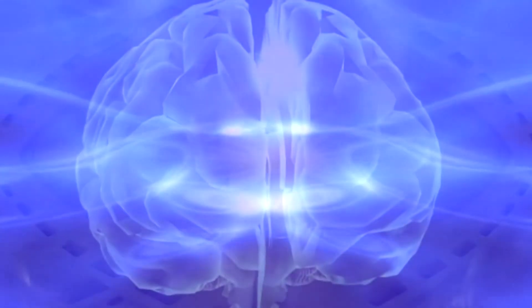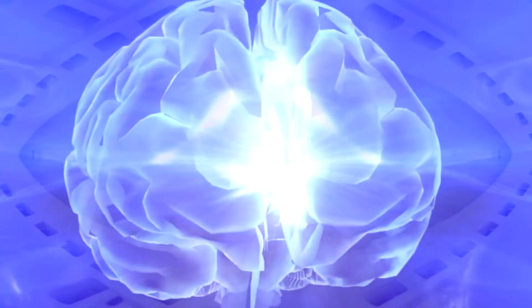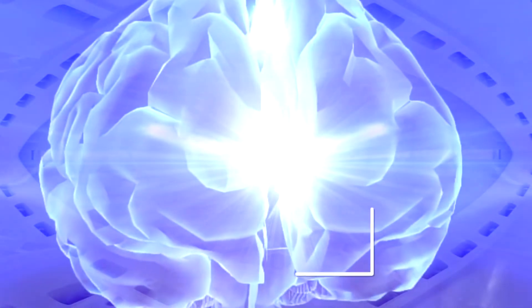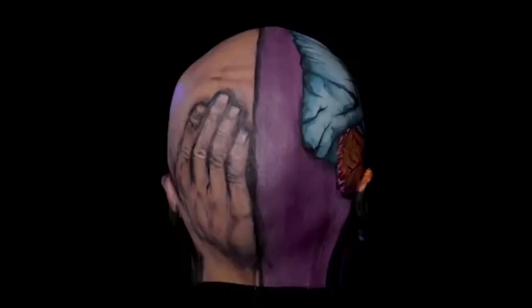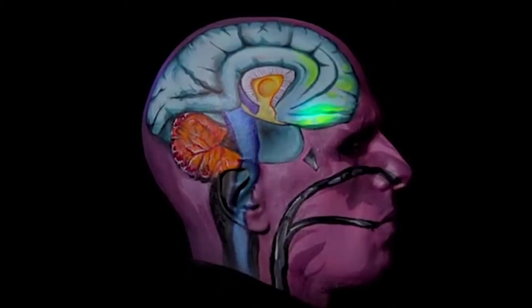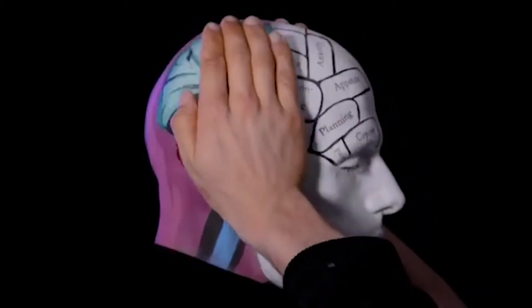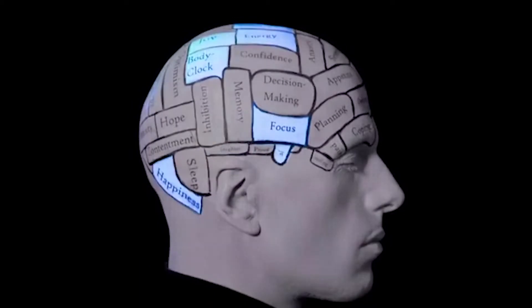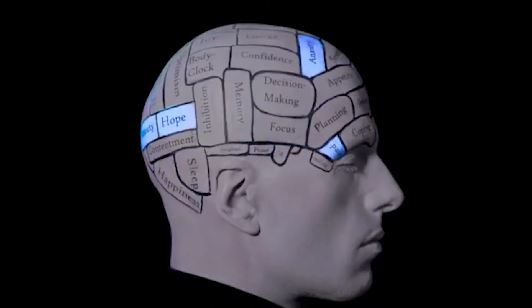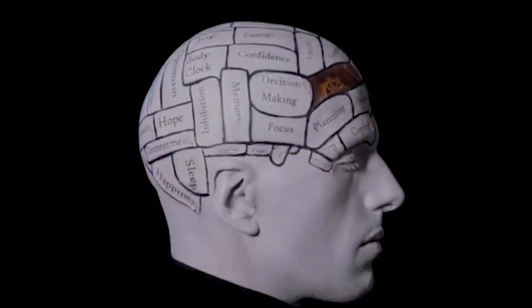Cognitive bias is a tendency by the human brain to perceive information through a filter of personal experience and preferences. It is a coping mechanism by the brain to prioritize and process the vast amount of information it receives. It is an effective mechanism, but it can cause errors to persist in the longer run. There are many common cognitive biases that can lead to bad decision making.